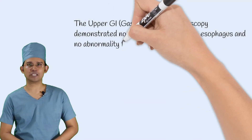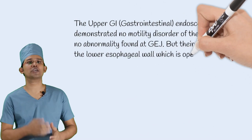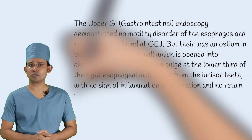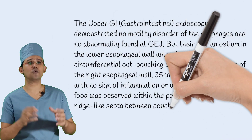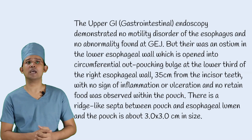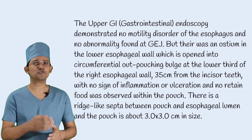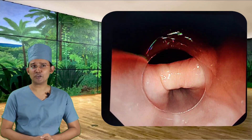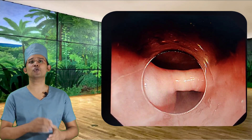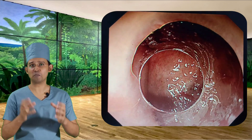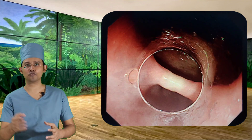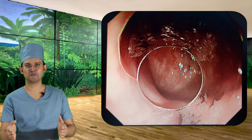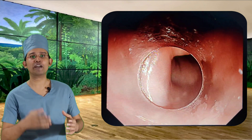Upper GI endoscopy demonstrated no motility disorder of the esophagus and no abnormality at the gastroesophageal junction. There was an ostium in the lower esophageal wall opening into a circumferential outpouching pouch at the lower third of the right esophageal wall, 35 cm from the incisor teeth, with no sign of inflammation, ulceration, or retained food within the pouch. A ridge-like septum was present between the pouch and esophageal lumen, and the pouch measured approximately 3 x 3 cm.